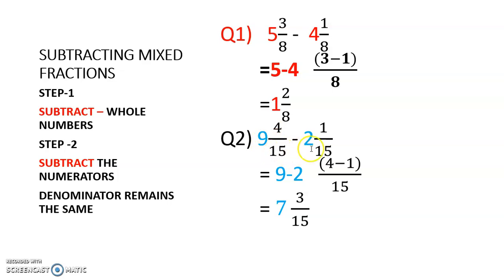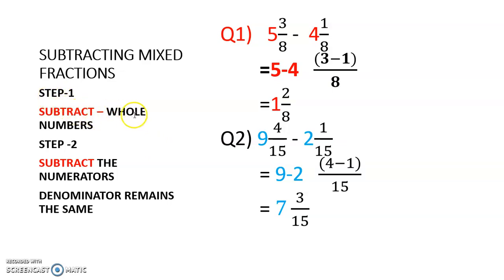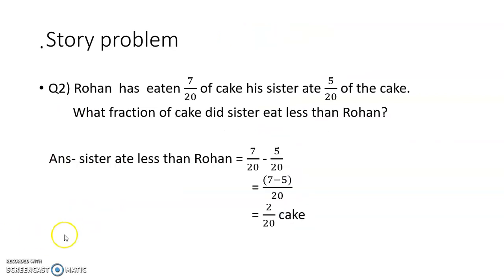One more example: 9 and 4 upon 15 minus 2 and 1 upon 15. So 9 minus 2 is 7, and 4 minus 1 is 3 upon 15. The answer is 7 and 3 upon 15. Steps: step 1, subtract whole numbers; step 2, subtract the numerators and denominator remains the same.